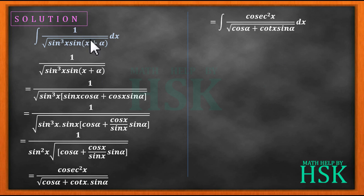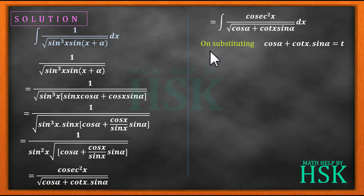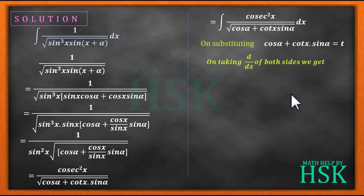The integration now becomes: integral of cosec²x upon square root of (cos α + cot x · sin α) with respect to x. On substituting t = cos α + cot x · sin α and differentiating both sides with respect to x: